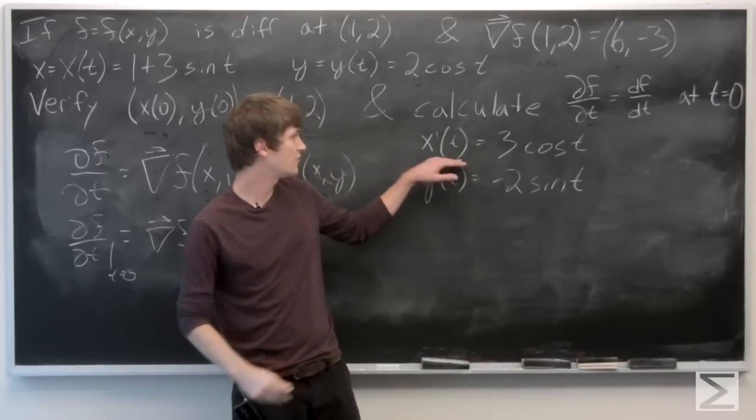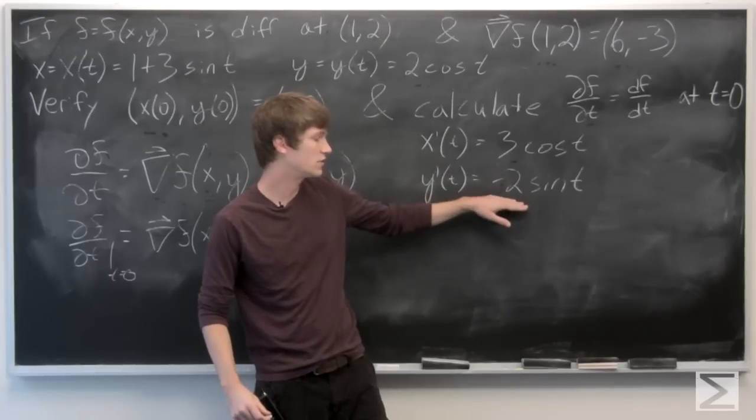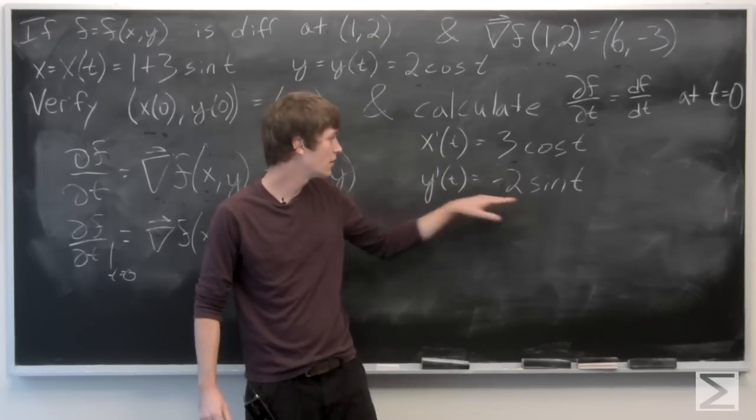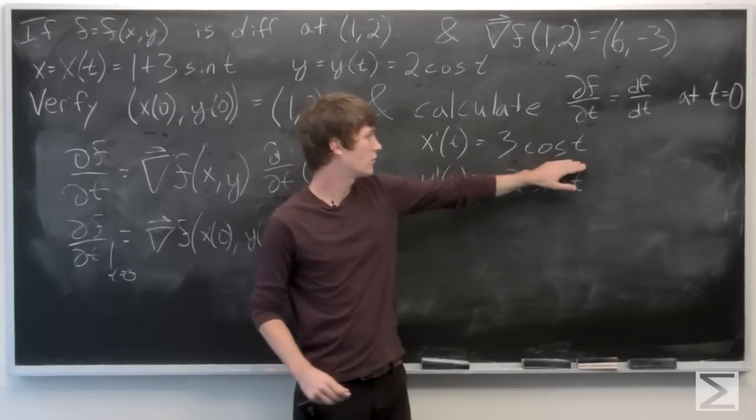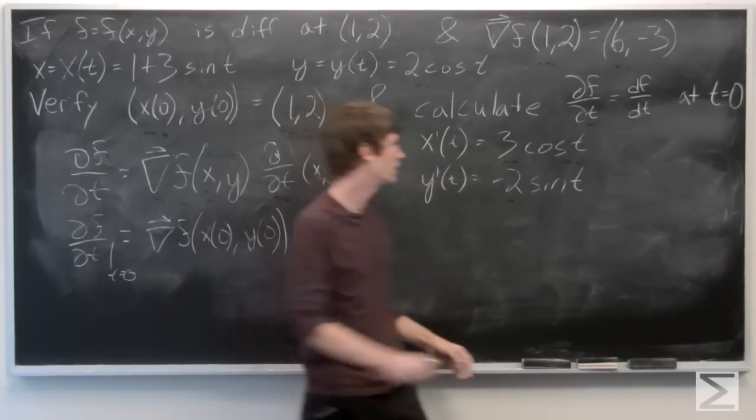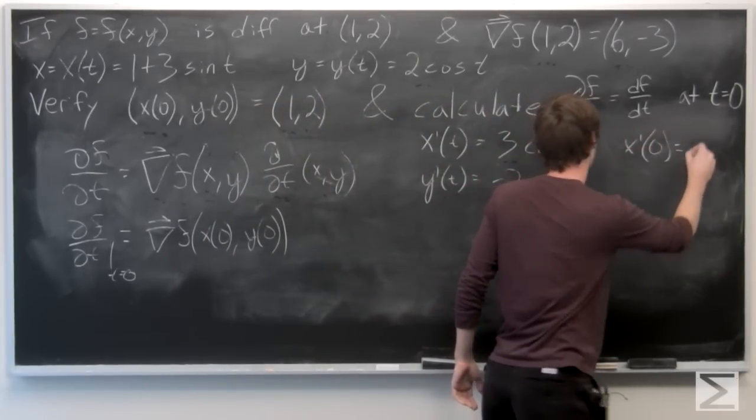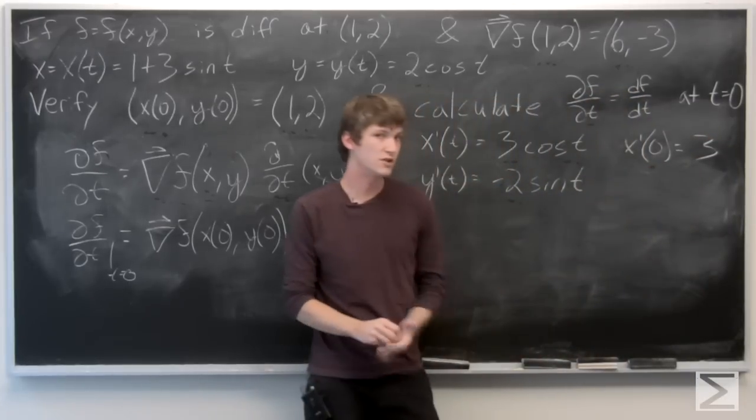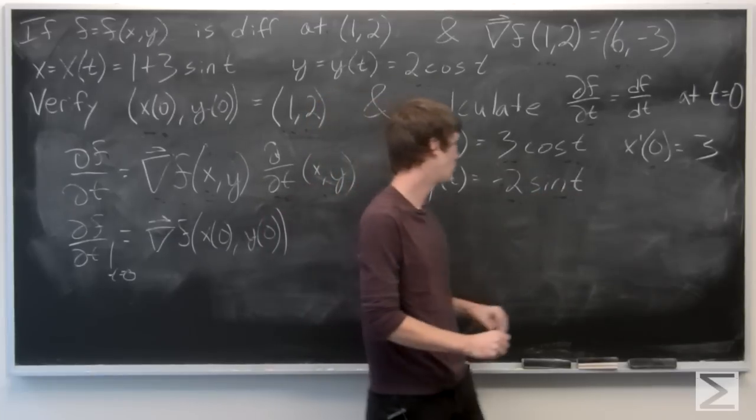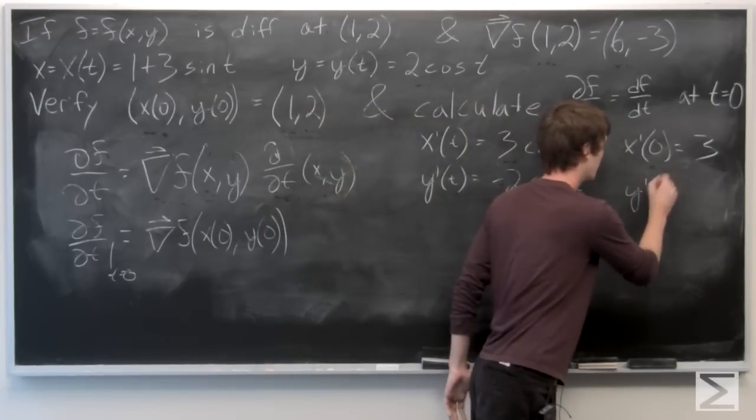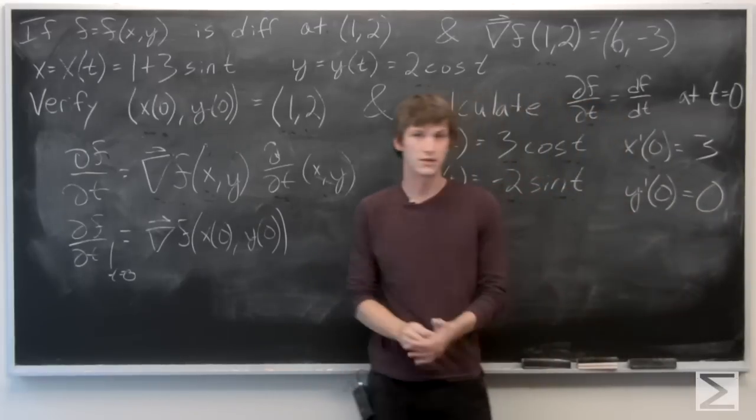So we get that x prime of t is equal to 3 cosine t and y prime of t is equal to negative 2 sine of t. We're going to evaluate this at point t equals 0. Cosine 0 is 1, so we get x prime of 0 is equal to 3. Sine of 0 is 0, so y prime of 0 is equal to 0.